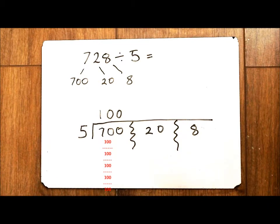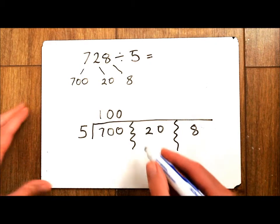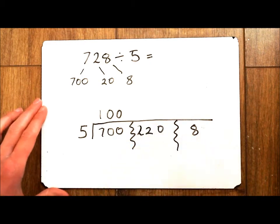One 100 in each of my 5 groups. And I'm going to have two hundreds left over. So those two hundreds I'm going to go in my tens column.